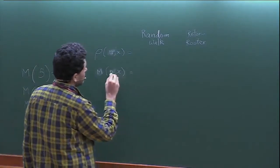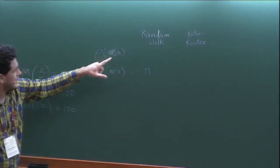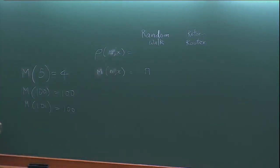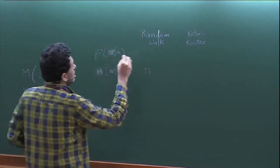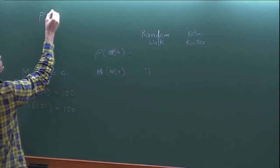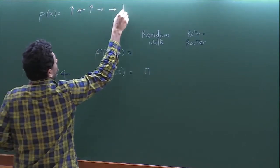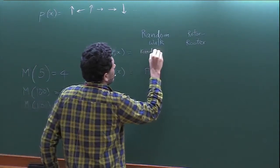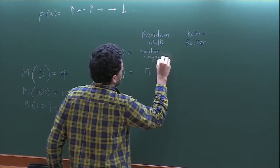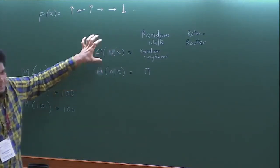Let's describe a random walk in this framework. For a random walk, if I receive n chips, I send out all n — I keep none. And rho, which is a stack at each site, is a set of instructions for where to send the nth chip received. For a random walk, rho of x will just be a sequence of random directions. Basically, every chip I receive I send to a random neighbor. That describes the random walk in the Abelian stacks framework.